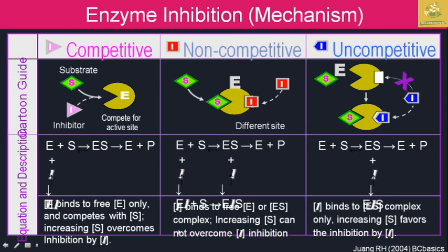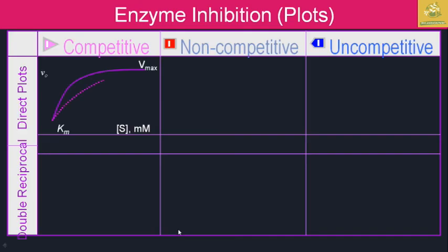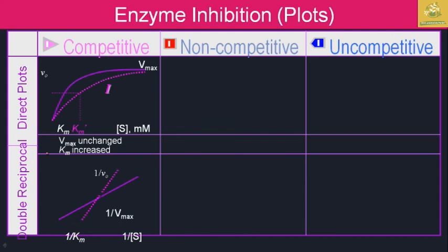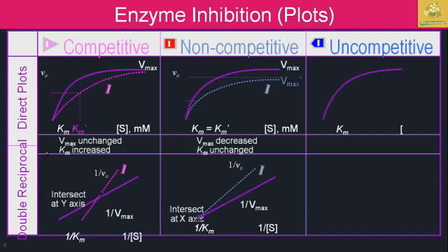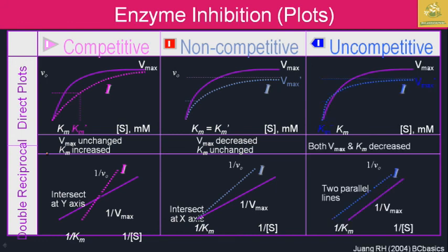In the Lineweaver-Burk plots: in competitive inhibition Vmax is unchanged and Km is increased; in non-competitive inhibition Vmax is decreased and Km is unchanged; in uncompetitive inhibition both Vmax and Km are decreased. These are the key differences you must know for enzyme inhibitor plots.